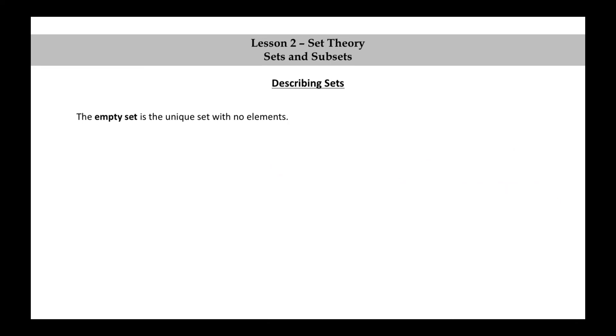The empty set is the unique set with no elements. We will usually use the following symbol to denote the empty set. It's like a little circle with a diagonal line through it. Some authors use a different symbol, just basically a set of brackets with nothing inside.